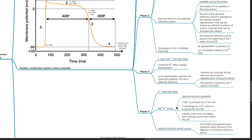During Phase 4, potassium channels close and the sodium-potassium pump restores the ionic gradients: 3 sodium ions are pumped out of the cell in exchange for 2 potassium ions pumped in. Overall, a slow loss of positive ionic charge occurs from within the cell. The relative refractory period occurs, and the earliest propagated action potential marks the end of the effective or functional refractory period.